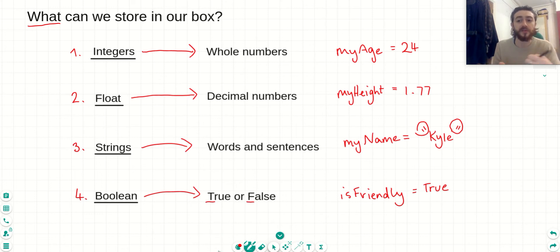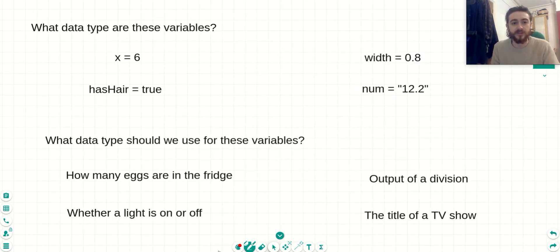So now we know the four different data types that we can use in Python. Let's have a look at some examples and let's try and figure out together, what data types are these variables. So this first one here, we have, let's break it down, a name of x. And the data stored in it is six. Now we know that this is a whole number, obviously, which means that the variable x is an integer.